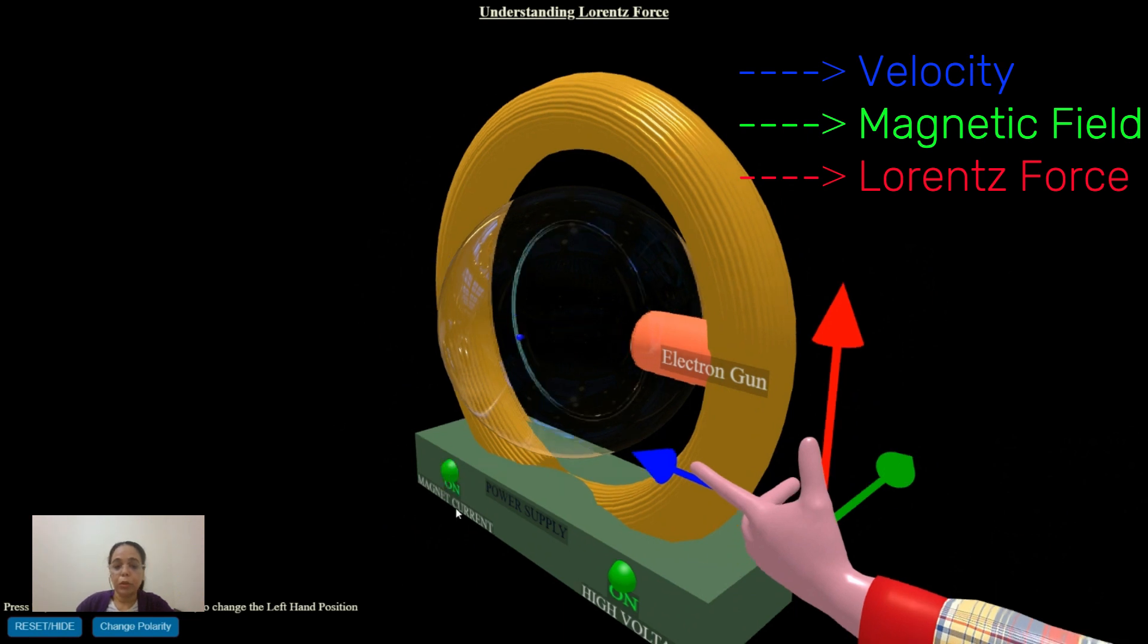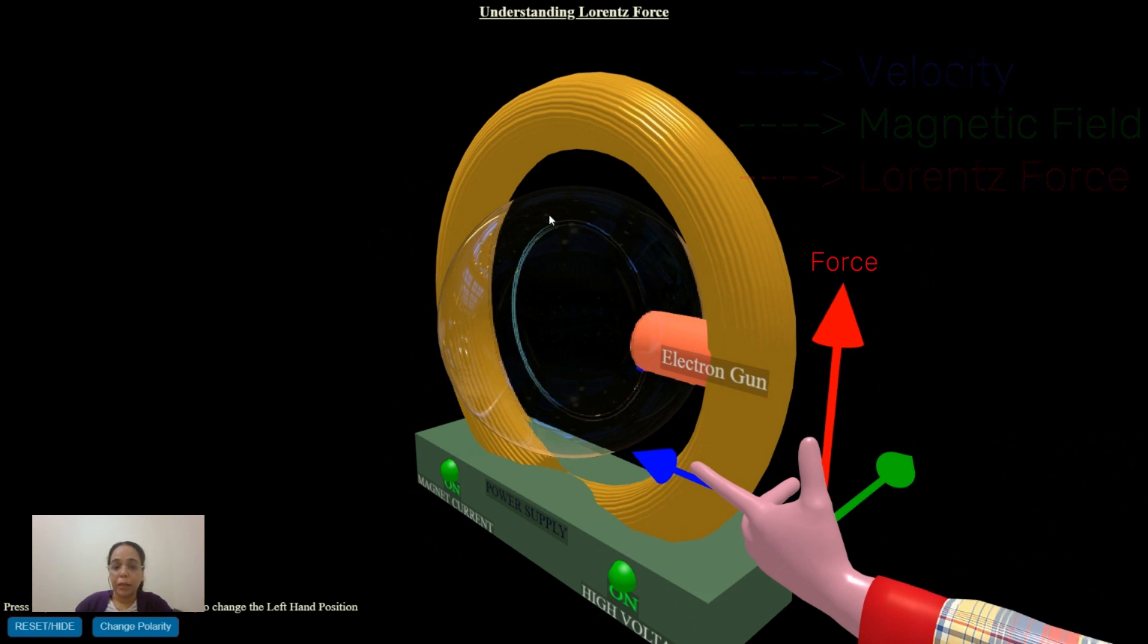The current flows through the coil, a magnetic field generates, and then a force acts on these moving charges. The path now taken by the electron is this circular path, and the radius of this circular path actually depends upon the energy of these electrons.